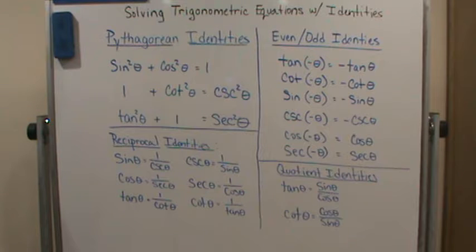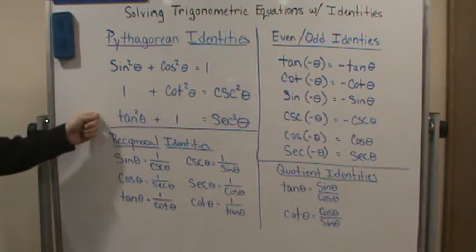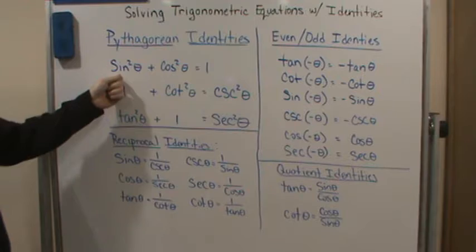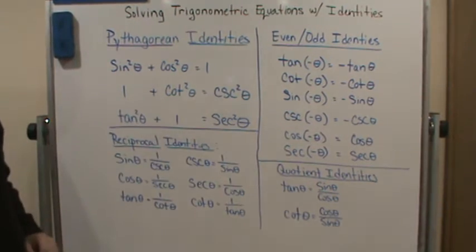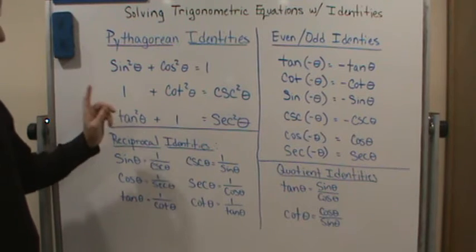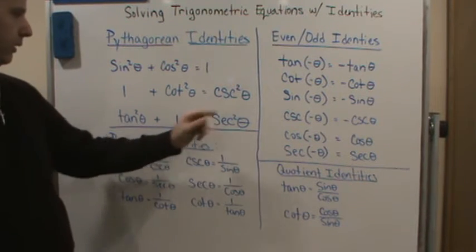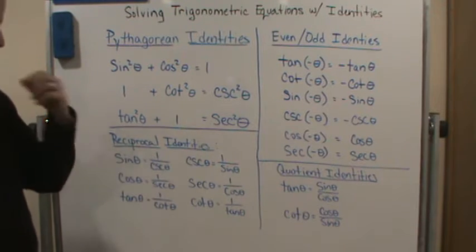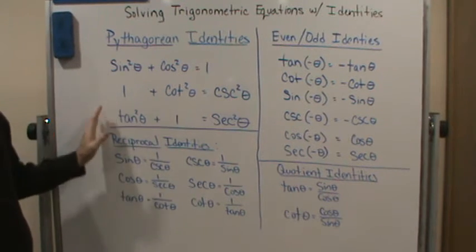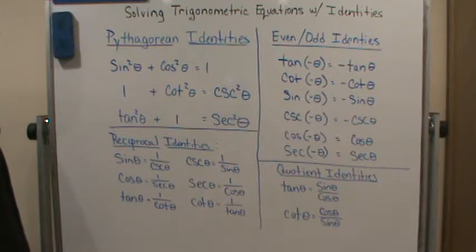So again, the Pythagorean identities. Remember how to get the other two. All you have to do is divide the first one by sine to get the second one. Divide it by cosine to get the third one. We've already verified those in previous videos.